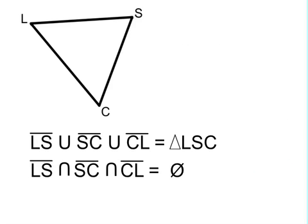But if we try to take the intersection of all three sides of a triangle, it's the empty set. While any two sides of a triangle intersect in a point, there is no point shared by all three sides of a triangle.